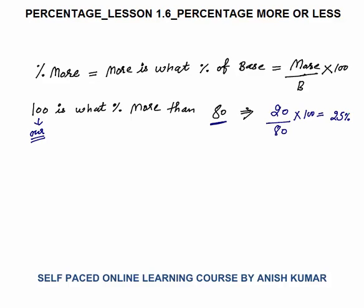Now as in the case of percentage increase or decrease, you can take the ratio. Rather than calculating 100 is what percent more than 80, if the numbers are simple, I can take the ratio: 100 is to 80, which simplifies to 5 is to 4.